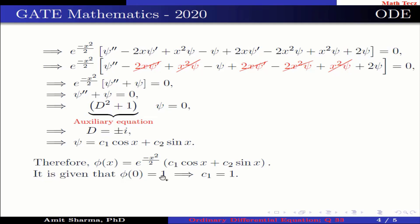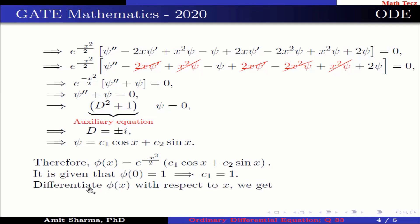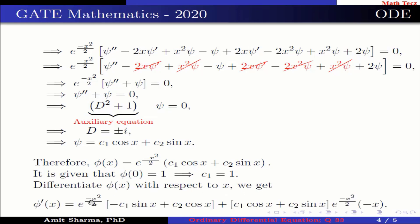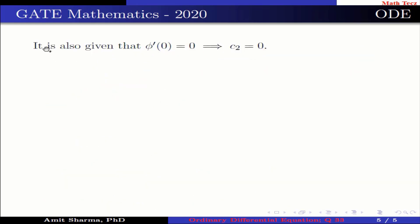It is given that φ(0) = 1; substituting this value gives c₁ = 1. Differentiating φ(x) with respect to x, and using the condition φ'(0) = 0, we get c₂ = 0. Therefore φ(x) = e^(−x²/2)·cos x.